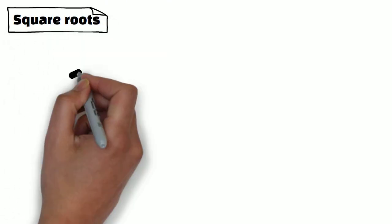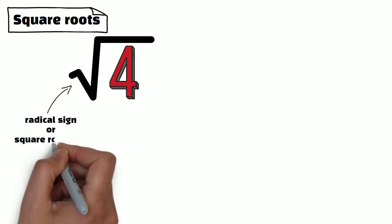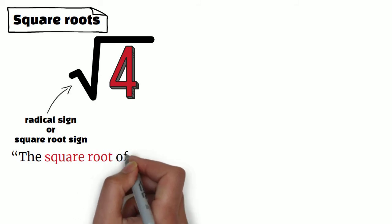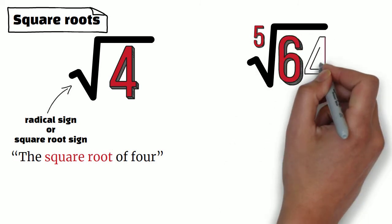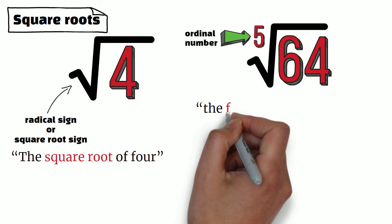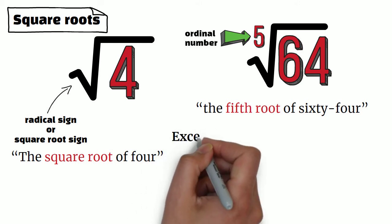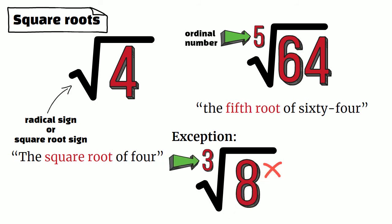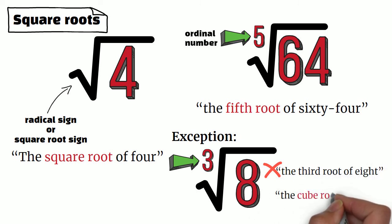Let's move on to square roots. The first symbol you see is the radical sign, sometimes also called the square root sign. We read this as 'the square root of 4.' If there is a number above the radical sign, we use an ordinal number to refer to it — for example, 'the fifth root of 64.' However, there is an exception: if the number above the radical sign is 3, we say 'the cube root of 8,' not 'the third root of 8.'